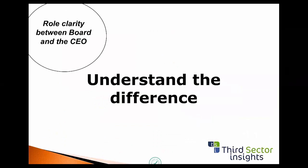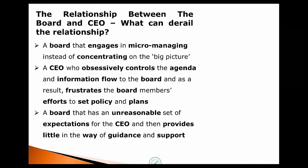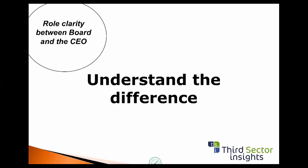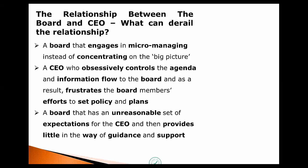Let's look at role clarity between the board chair and CEO. What can derail the relationship between your CEO and your board? We have a board that engages in micromanaging instead of concentrating on the big picture — where every board member is phoning the CEO every day, creating an operational nightmare. I'm dealing with one organization with 20 board members, each phoning the CEO every day. The CEO says: I'm so impressed I have an engaged board, but I can't get my work done because they each have an opinion.